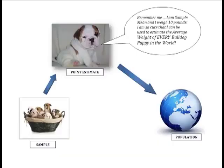You'll remember that at some point in one of my previous videos, we had a sample of bulldog puppies. From that sample, we weighed them all, came up with the average weight, and created a point estimate. That was our little puppy, SampleMe, and he weighed 10 pounds. With the use of confidence intervals and point estimates, we can use him to estimate the average weight of every bulldog in the world.